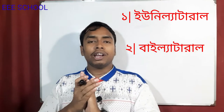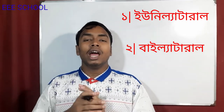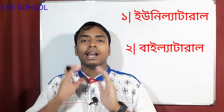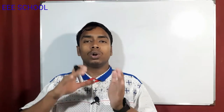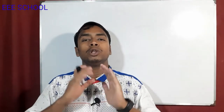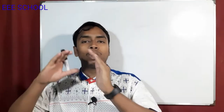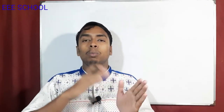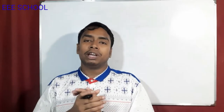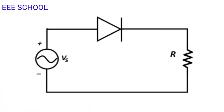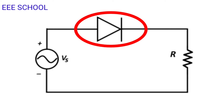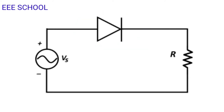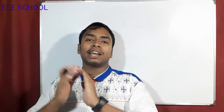Unilateral network and bilateral network. In a unilateral network, the characteristics of the network change with the direction of current flow. If we need a diode, we need a forward bias, so we need a lot of voltage in the circuit of conduction.